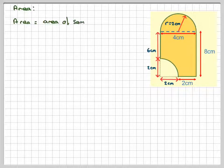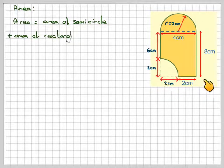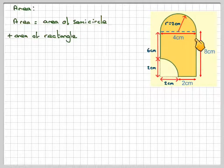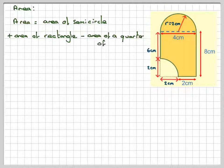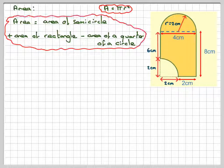So the area will be... area of the semicircle, plus the area of this rectangle, but we'll have to take away from it the area of this quarter of a circle. And we know that A is πr², so the area of a circle is πr².